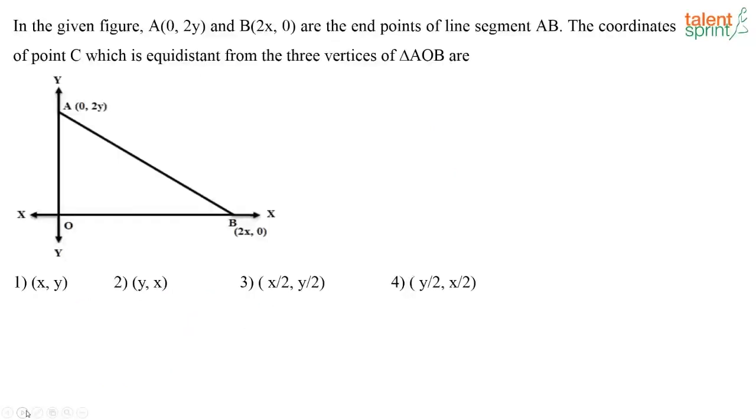In the given figure, A whose coordinates is (0, 2y) and B whose coordinates is (2x, 0) are the endpoints of line segment AB. The coordinates of point C which is equidistant from the three vertices of triangle AOB are?